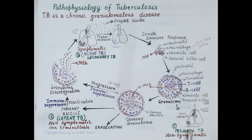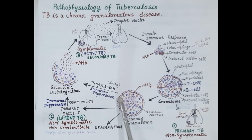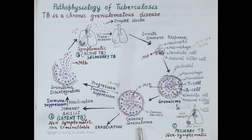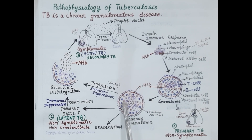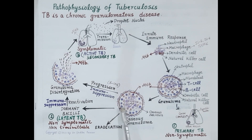Immune cells of the granuloma release inflammatory mediators to destroy the bacilli, and during this process a number of bacilli as well as macrophages are destroyed. The central part of the granuloma becomes soft like cheese due to necrosis — the death of macrophages and bacilli. This granuloma is termed as a caseous granuloma.